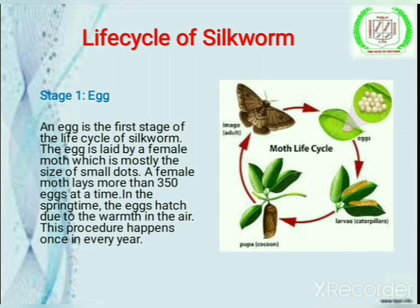Life cycle of silkworm — resham ke kidon ka jeevan chakr. It has five stages. The first stage is egg. An egg is the first stage of the life cycle of the silkworm. The egg is laid by a female moth and is mostly the size of a small dot. A female moth lays more than 350 eggs at a time. In spring, the eggs hatch due to the warmth in the air.